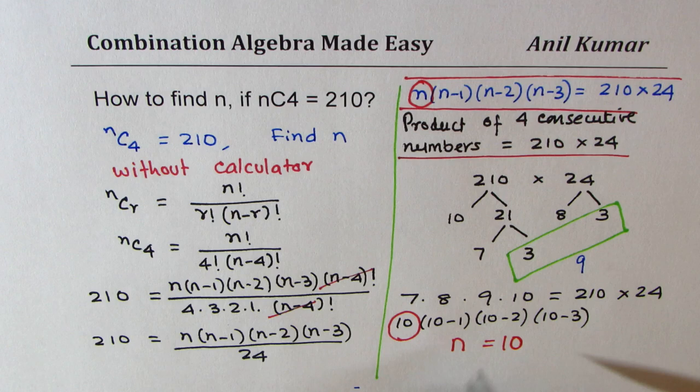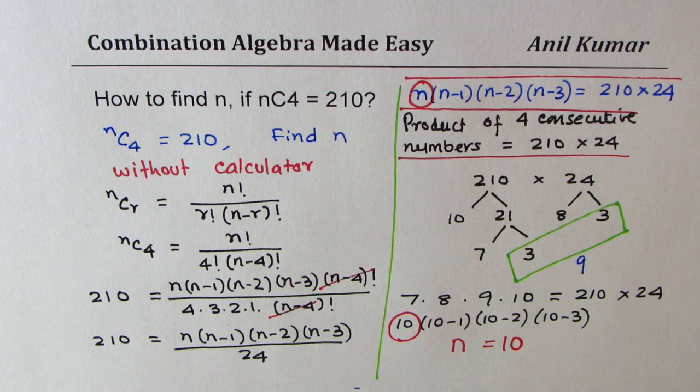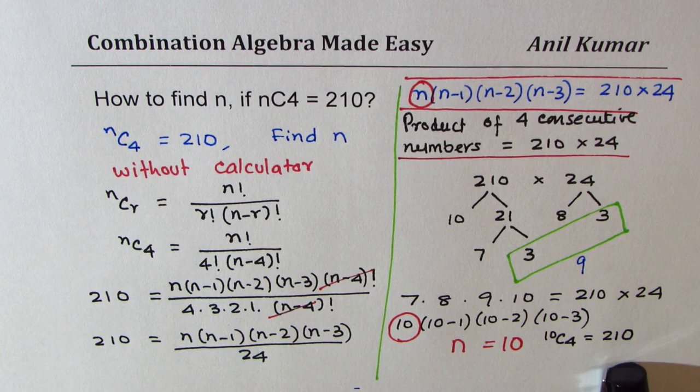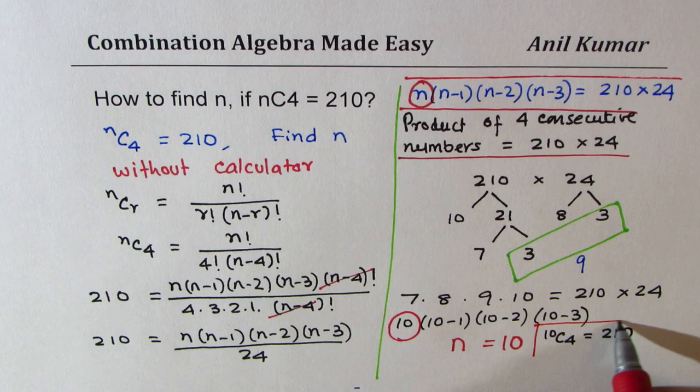So that concludes that 10C4 should be equal to 210. So that is how we can actually solve it even without a calculator. No calculations required.